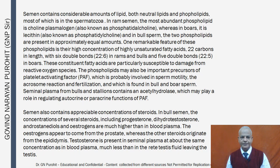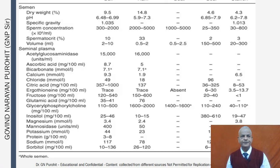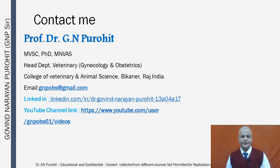Estrogens appear to come from the prostate, whereas other steroids originate from the epididymis. Testosterone is present in seminal plasma at about the same concentration as in blood plasma, much less than in the rete testis fluid leaving the testes. A chart shows semen dry weight, pH, specific gravity, and other parameters across different animal species.